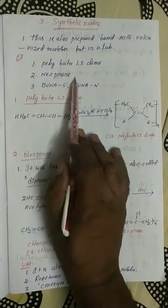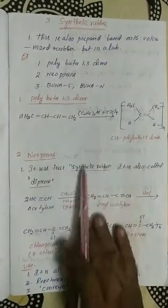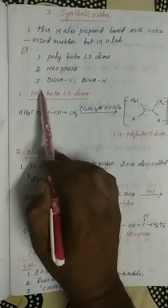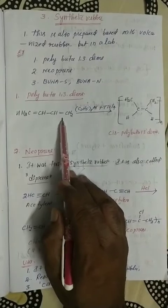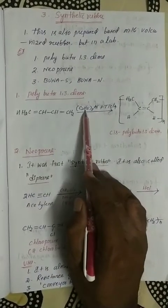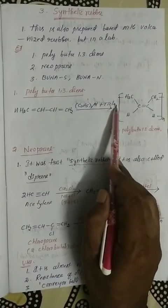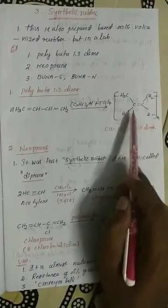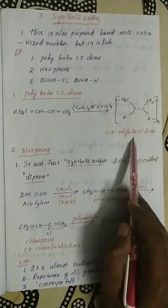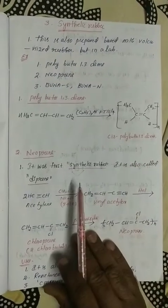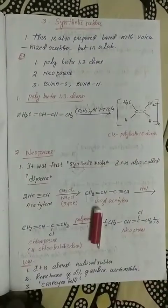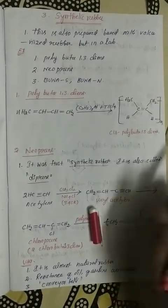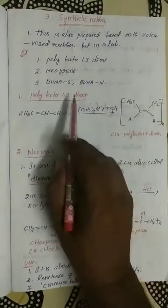Polybuta-1,3-diene: N number of buta-1,3-diene units polymerize in the presence of triethyl aluminium and titanium tetrachloride catalyst. Immediately, a cis combination forms through cis isomerism, and polybuta-1,3-diene rubber is formed. A number of buta-1,3-diene units connected together form this rubber.